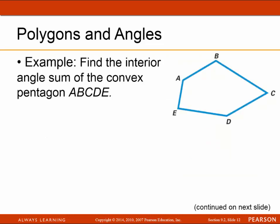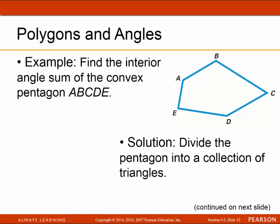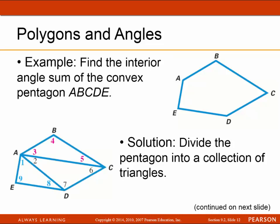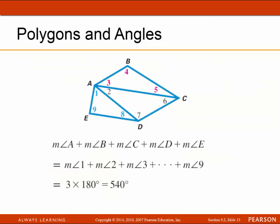Next, we'll find the interior angle sum of a convex polygon ABCDE. We divide the pentagon into a collection of triangles: triangle AED, triangle ADC, and triangle ABC — three triangles total. The sum of angles A, B, C, D, and E equals the sum of all nine angles from these three triangles. Since each triangle is 180 degrees, we multiply 180 by 3 to get 540 degrees as the interior angle sum of a pentagon.